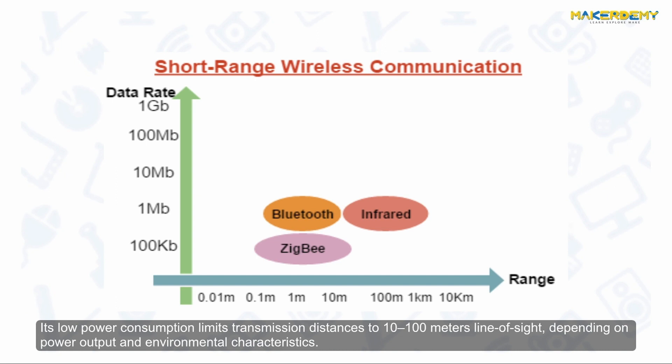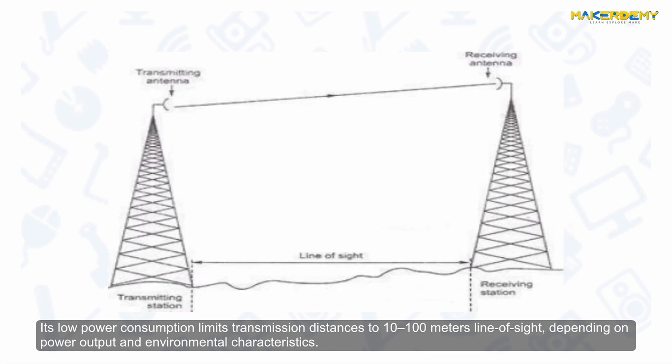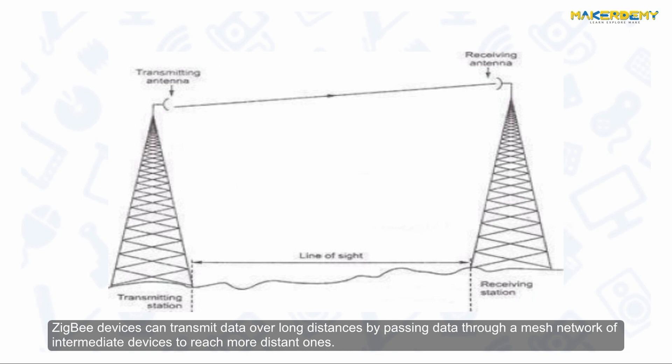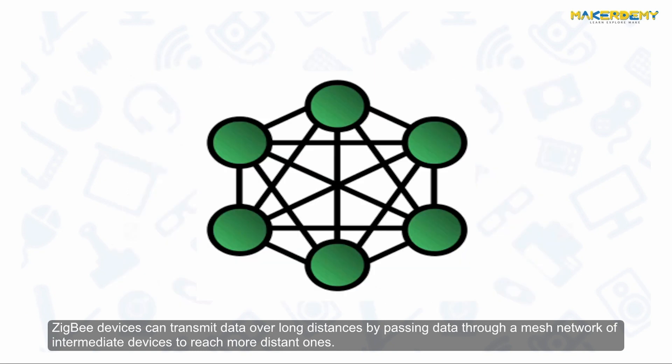Its low power consumption limits transmission distances to 10 to 100 meters line of sight, depending on power output and environmental characteristics. Zigbee devices can transmit data over long distances by passing data through a mesh network of intermediate devices to reach more distant ones.